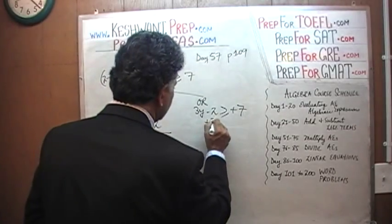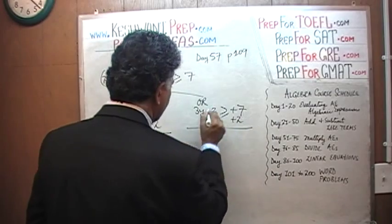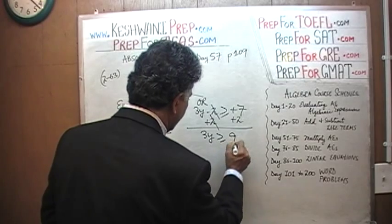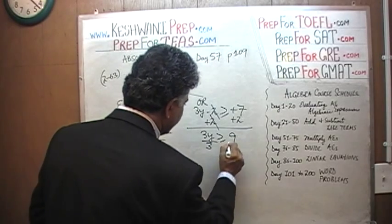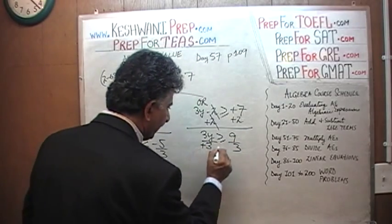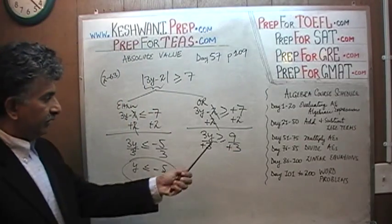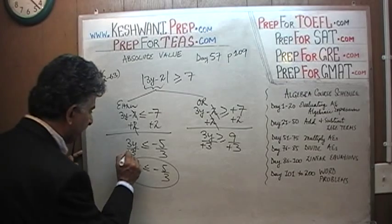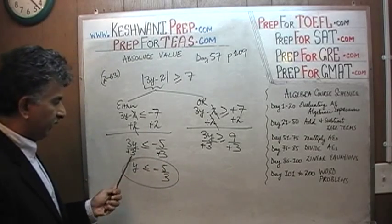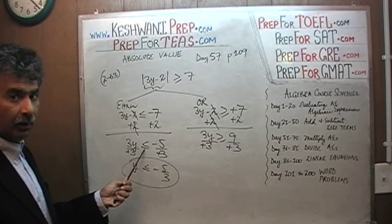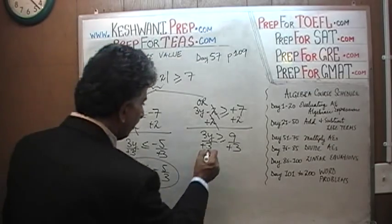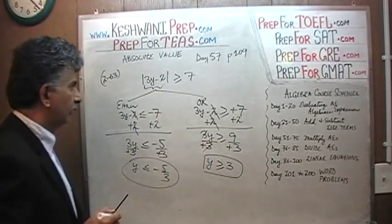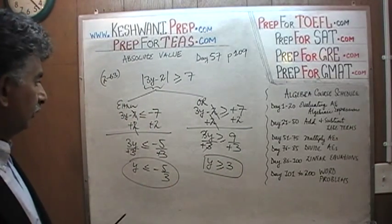For the second inequality, 3y minus 2 is greater than or equal to positive 7, we again add 2 to both sides. The 2 drops out, and 3y is greater than or equal to 9. Dividing both sides by 3 — again a positive number, so the inequality direction stays the same — we find that y is greater than or equal to 3. Those are our two solutions.